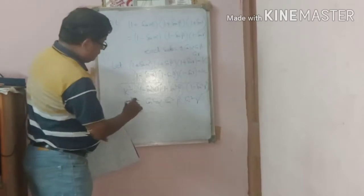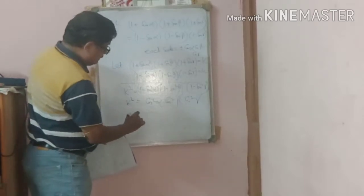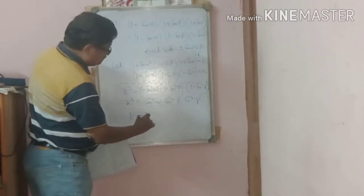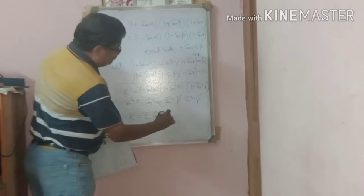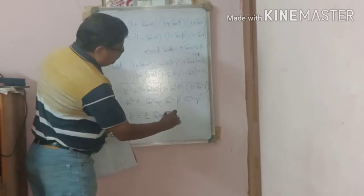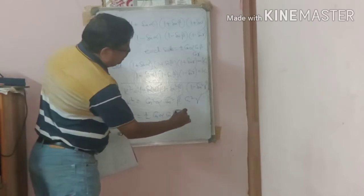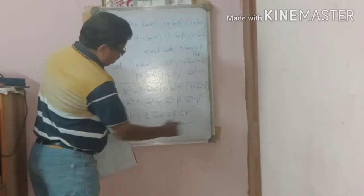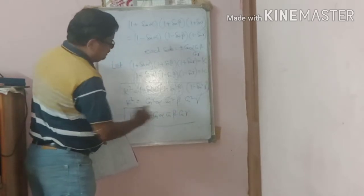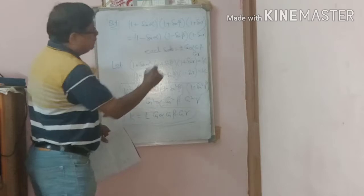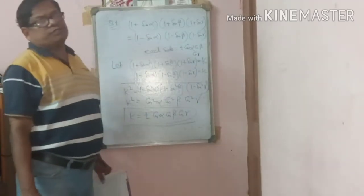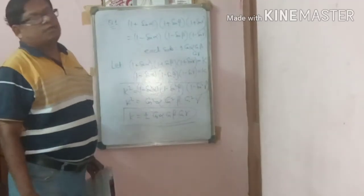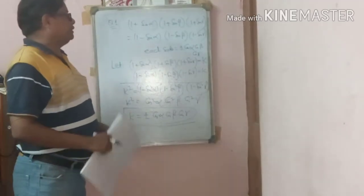So k² = cos²α · cos²β · cos²γ, which means k = ±cosα · cosβ · cosγ. Therefore, each side equals ±cosα · cosβ · cosγ. This is the proof.